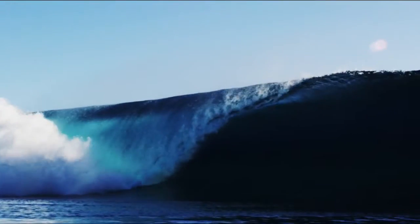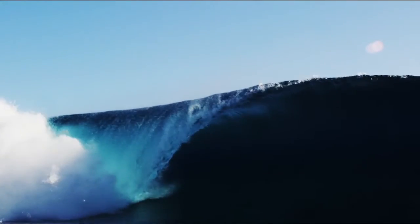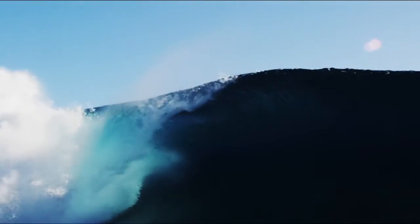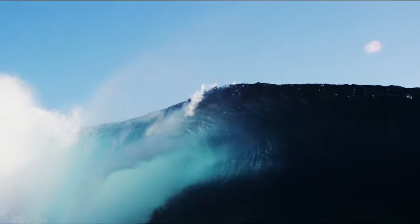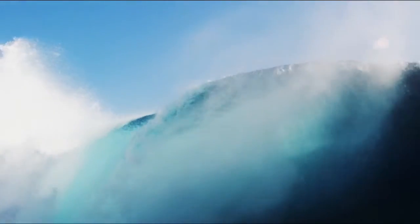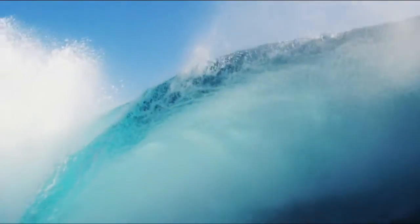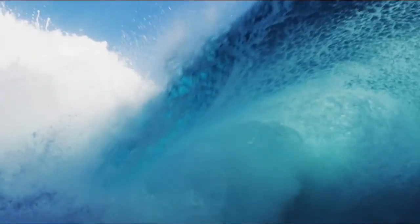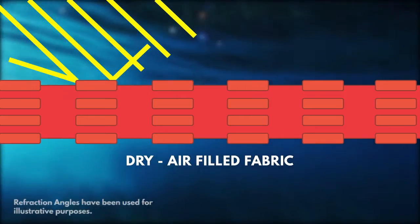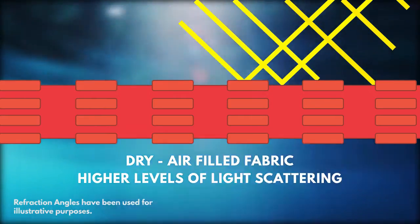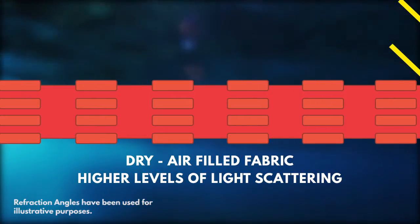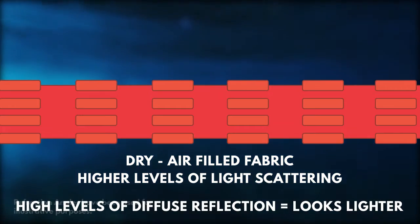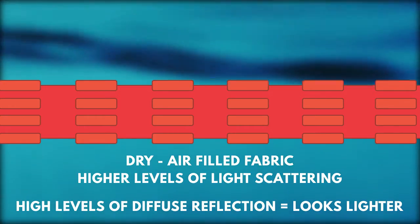What is important for the optical properties of the material is that the fibers and the air have different refractive indices. This refractive index number is the measurement of the bending of a ray of light when passing from one medium to another. The net effect is that when air fills the pores in the fabric, it results in a large number of scattering events, resulting in a large amount of diffuse reflection.